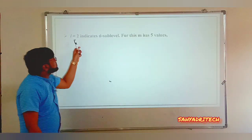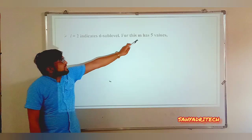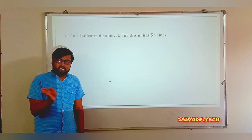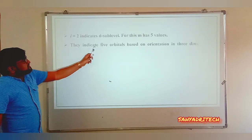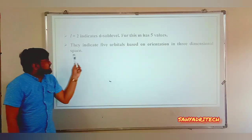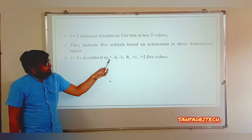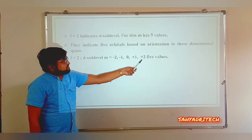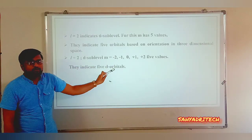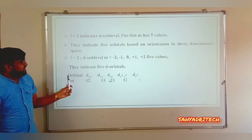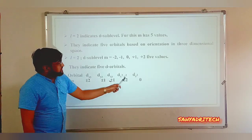When L = 2, which is the d subshell, M has 5 values ranging from −2, −1, 0, +1, +2. These 5 values indicate 5 orientations, meaning there will be 5 d orbitals: Dxy, Dyz, Dxz, Dx²−y², and Dz², all based on their orientations in 3-dimensional space.